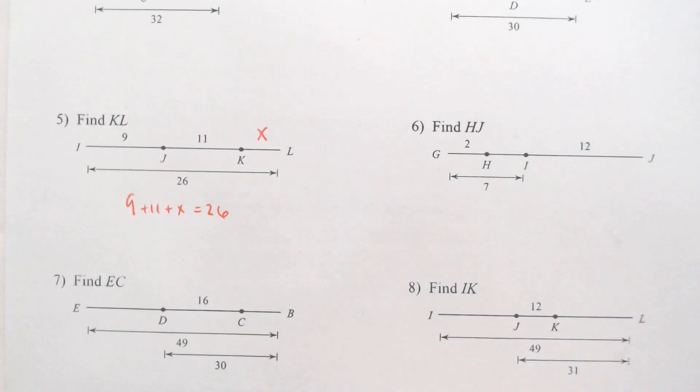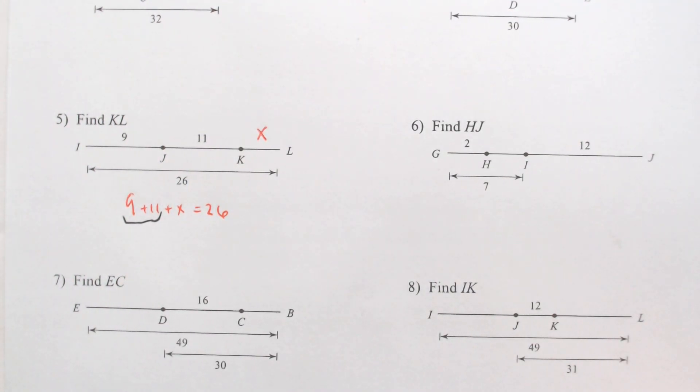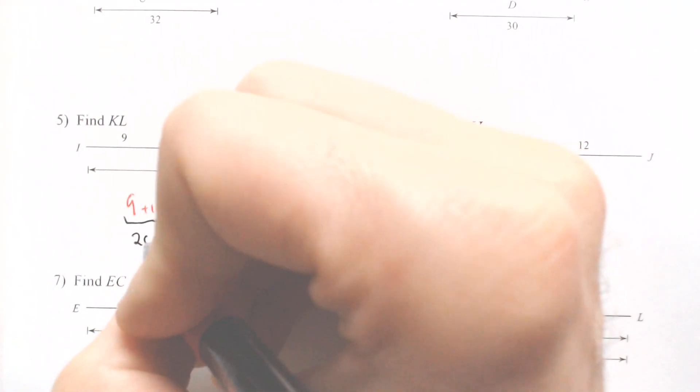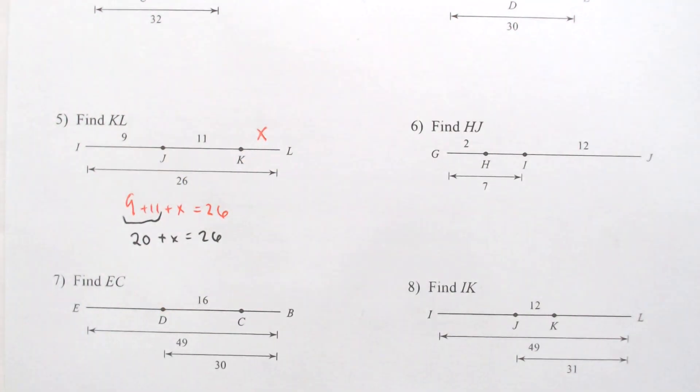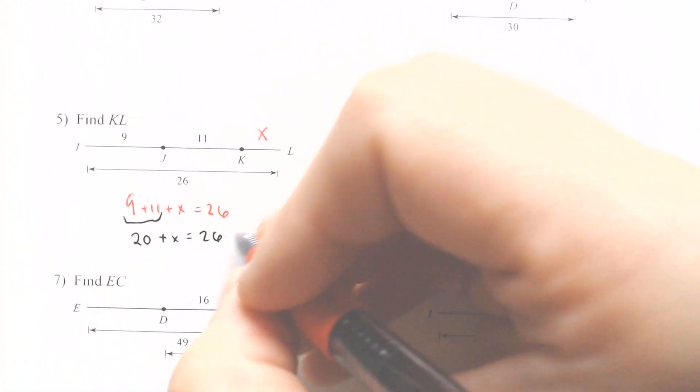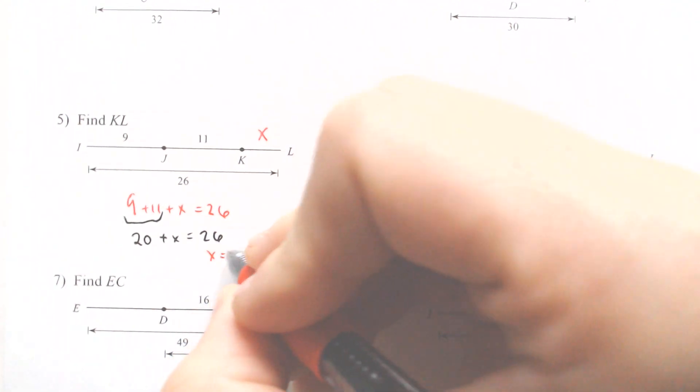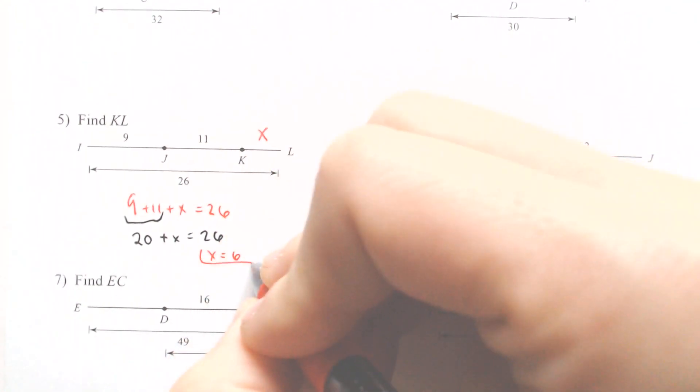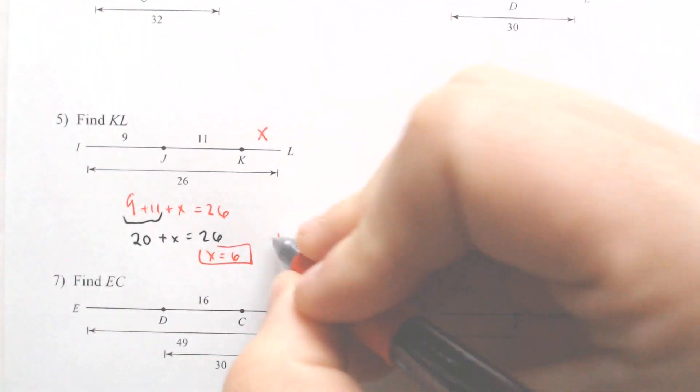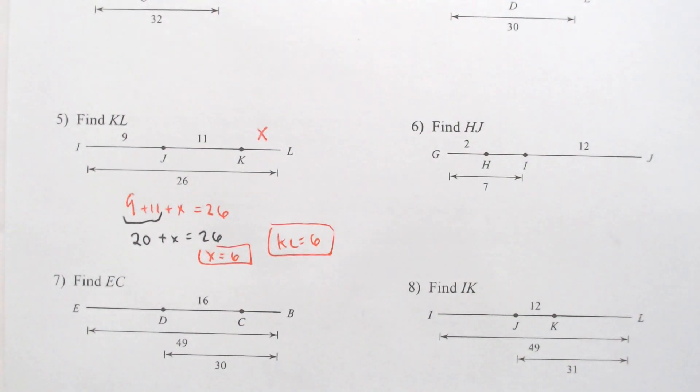Some of us might need the equation for that, others might not. You can combine like terms to get 20 plus X equals 26. Subtract the 20 over, and you find out that X equals 6, which in this case is KL equals 6.